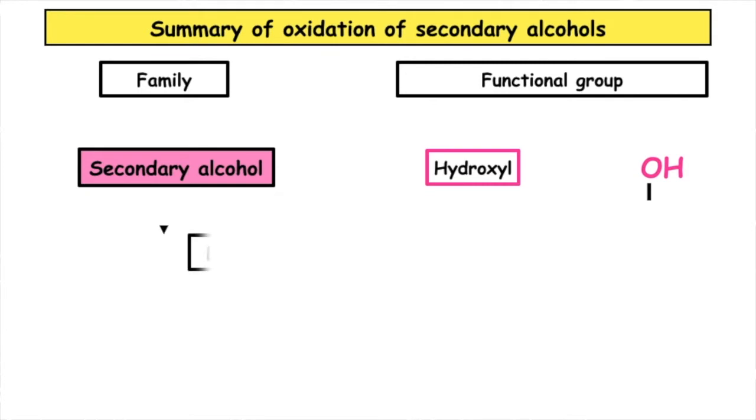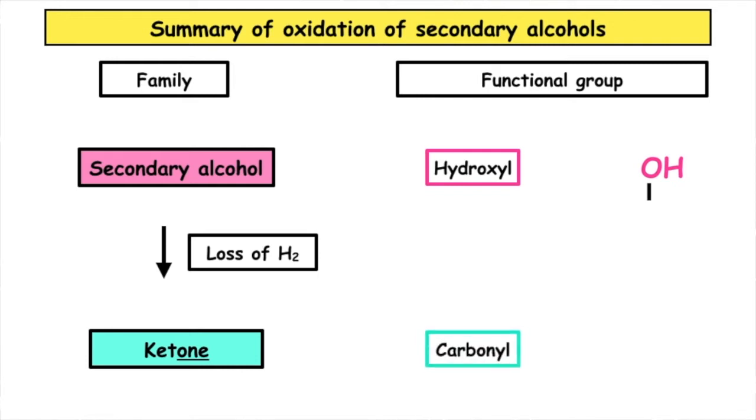The first stage of oxidation is the loss of hydrogen and we would produce the family known as the ketones. The name of that functional group is the carbonyl.